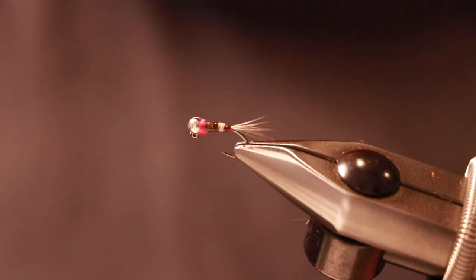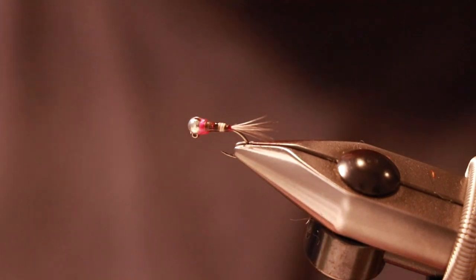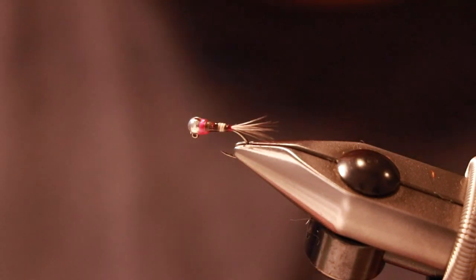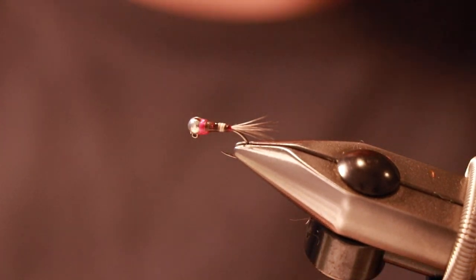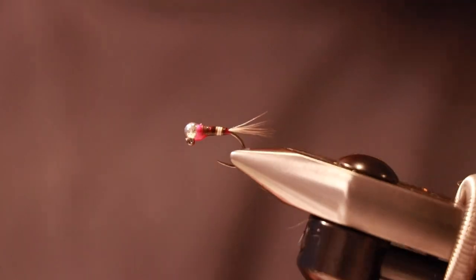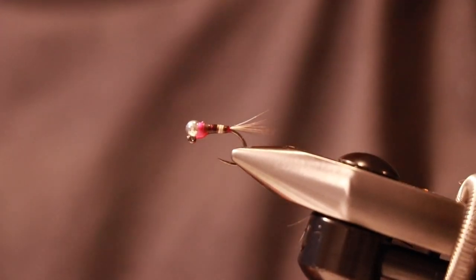There we have it. That is the peccary Perdigon, give it a go. I would definitely tie them in 16s. If you fish smaller rivers I would definitely tie them in 18s. Either way give them a go because they are absolutely deadly. Thanks for watching.